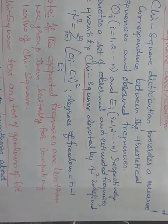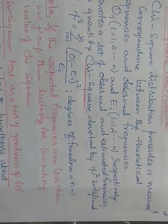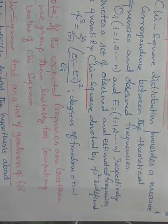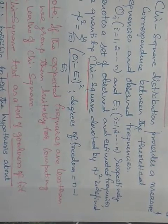If the calculated value of chi-square is less than the table value of chi-square at a specified level of significance, the hypothesis is accepted. Otherwise, the hypothesis is rejected. And now we shall go for one example.